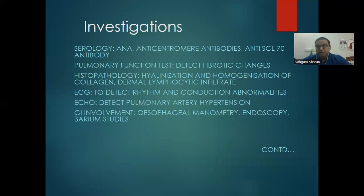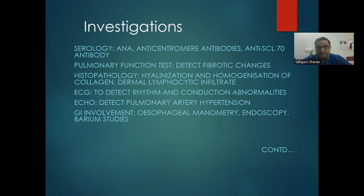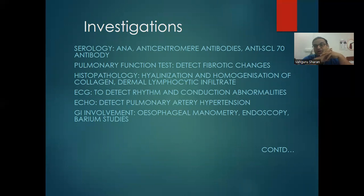Investigations: ANA is positive — then proceed to profile. Anticentromere antibodies indicate CREST syndrome; anti-SCL70 indicates diffuse scleroderma. Pulmonary function tests detect fibrotic changes. Histopathology shows hyalinization and homogenization of collagen, dermal lymphocytic infiltrate. ECG shows rhythm and conduction abnormalities. Echo shows pulmonary artery hypertension. GIT workup includes esophageal manometry, endoscopy, and barium studies.